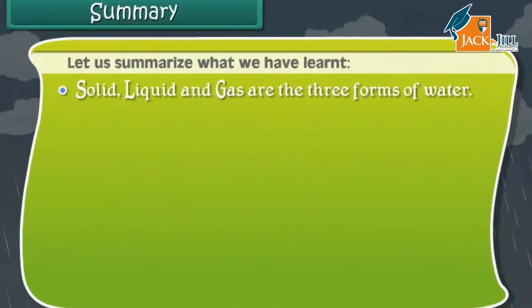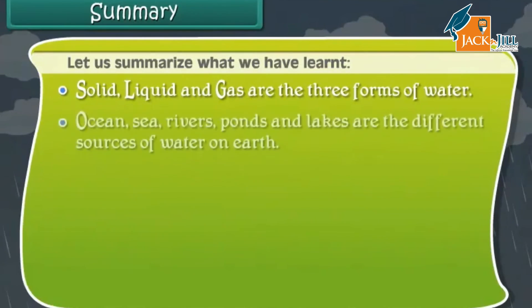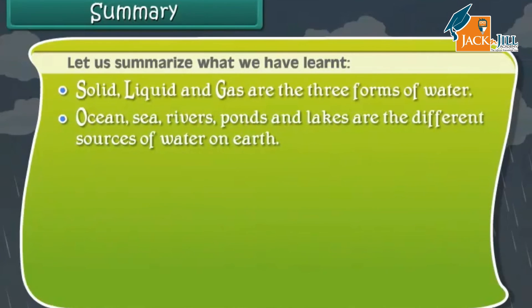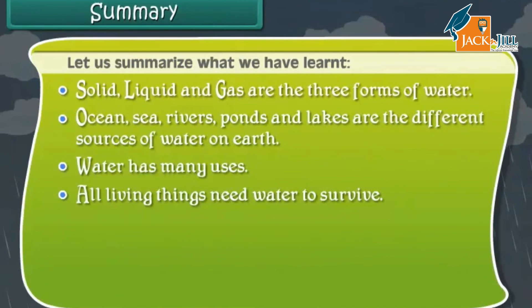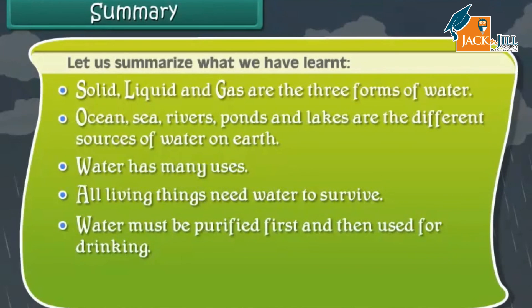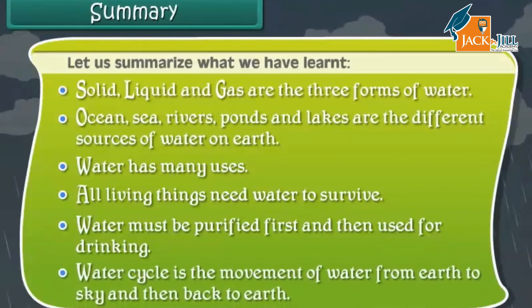Solid, liquid, and gas are the three forms of water. Oceans, seas, rivers, ponds, and lakes are the different sources of water on Earth. Water has many uses and all living things need water to survive. Water must be purified first and then used for drinking. The water cycle is the movement of water from Earth to sky and then back to Earth.